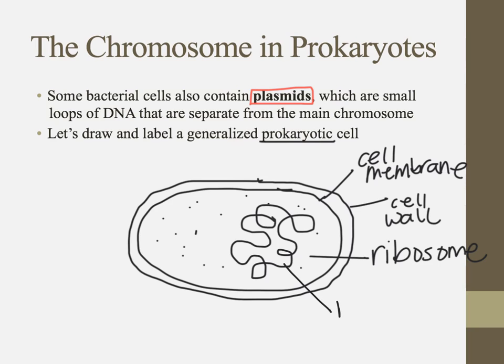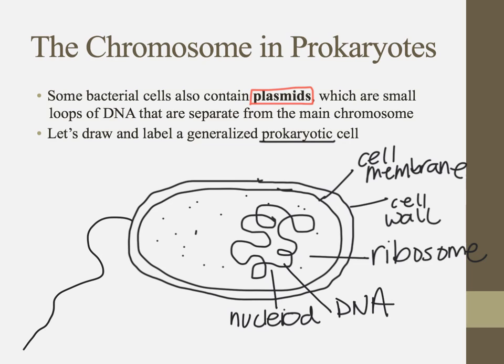This is, of course, the DNA. And you might refer to this region as the nucleoid region. Since there's no nucleus, just the area where that DNA hangs out is called the nucleoid. Some prokaryotes might have a flagella for movement — not all, but some.